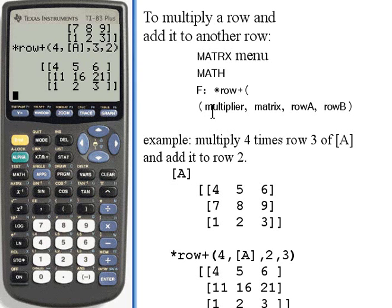So again, the format for this is, you have to tell the calculator the multiplier, the matrix name, the row you want to multiply, and then the row you want to add that product to. So that's row operations in TI-83 and TI-84 calculators. Take care. I'll see you next time.